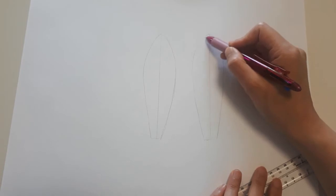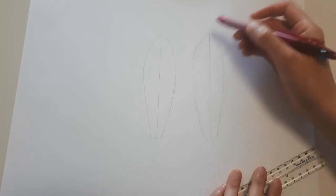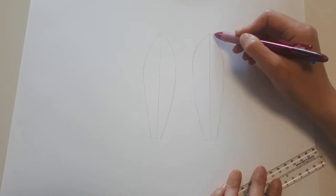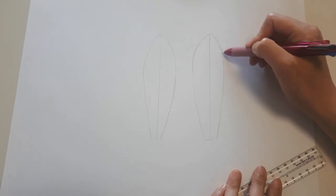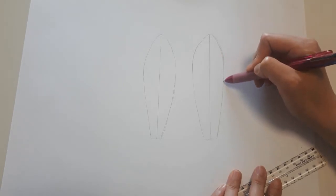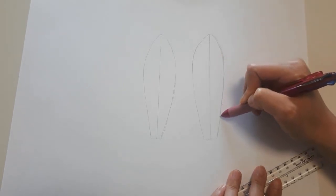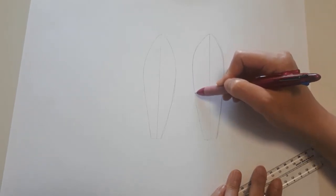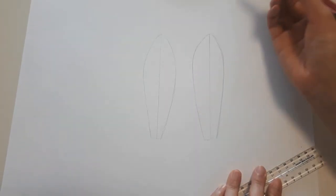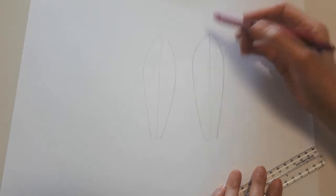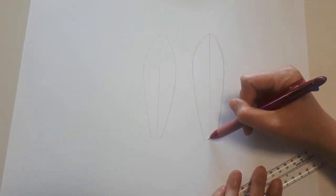And then you draw the rabbit ear. Make sure that the curve over here is a little bit wide, and it should be narrower over here. Okay. And next, you're going to draw inside rabbit ear.